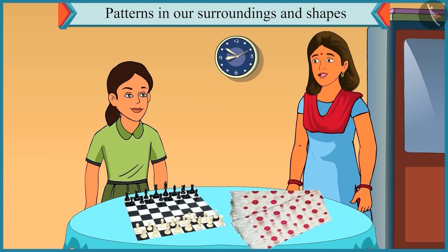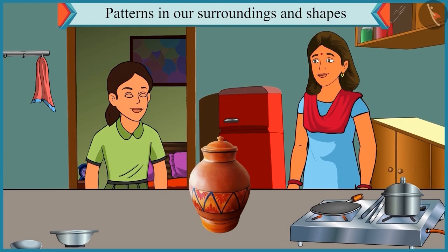Chutki, come on. Now, let's go to the kitchen. Okay. Let's go. Now, look. A pattern is made using triangles on this pot of water.